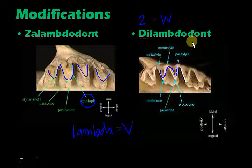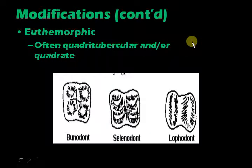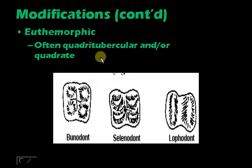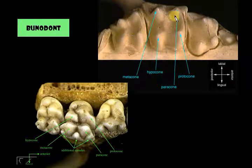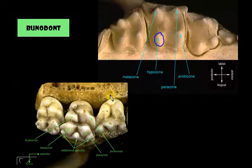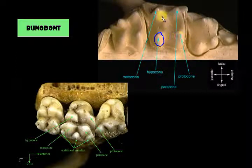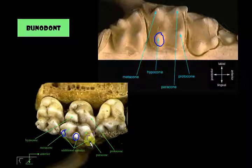The next type is bunodont, which is a euthemorphic type of occlusal surface. These teeth have four cusps and are quadrate, meaning square-shaped. This involves the addition of the fourth cusp called the hypocone. Here we have the example of a hedgehog showing the four basic cusps. It can become more complicated with additional conules, but essentially if there are four main cusps, it's bunodont.